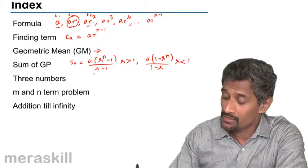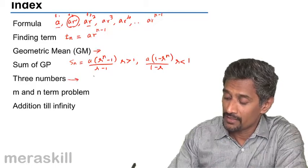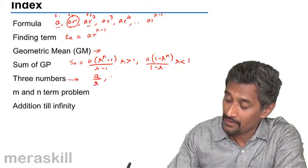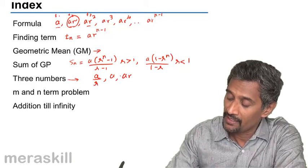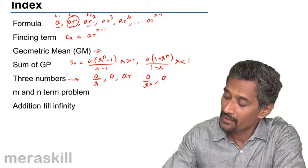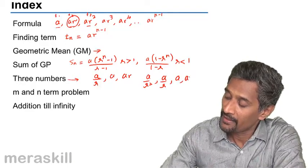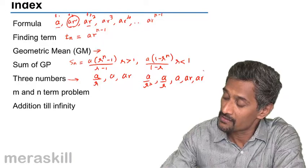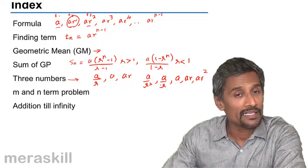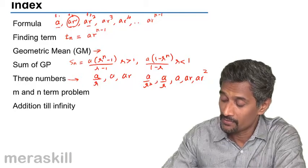Then three numbers—suppose three numbers are in GP, then we can take them as A by R, A, and AR. If five are in GP, it's going to be A upon R squared, A by R, A, AR, AR squared, and so on. So the difference is case of 1 by R or R.